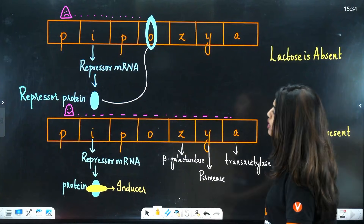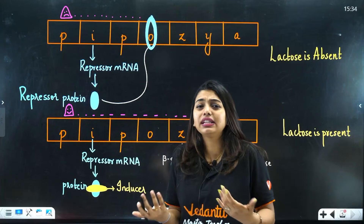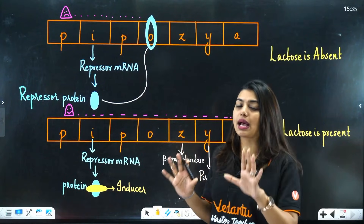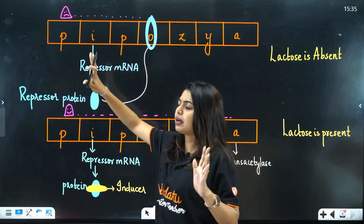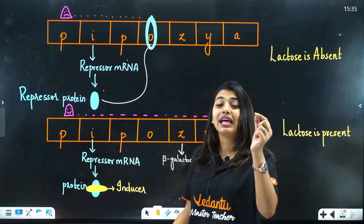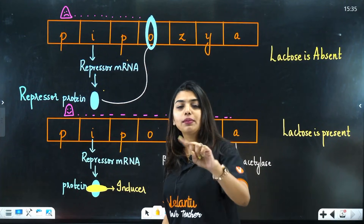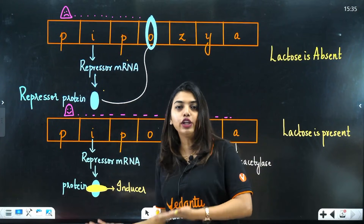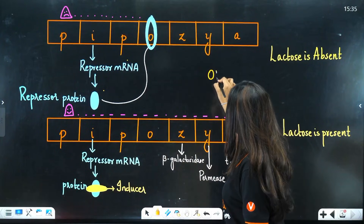Now, what does this repressor do? If lactose is absent — imagine the surroundings have no lactose and E. coli has enough glucose — the I gene forms repressor mRNA, which forms repressor protein. This repressor protein has a site to bind with the operator, so it goes and binds there. RNA polymerase, which came for transcription, gets blocked and cannot move further — like a full road block.